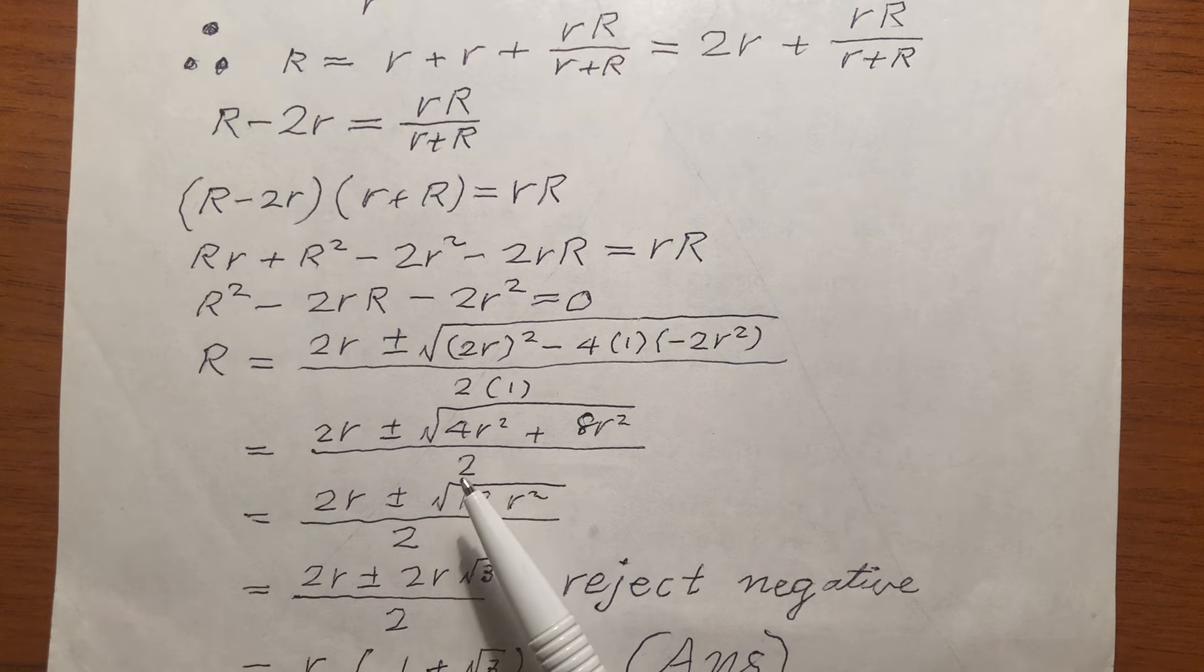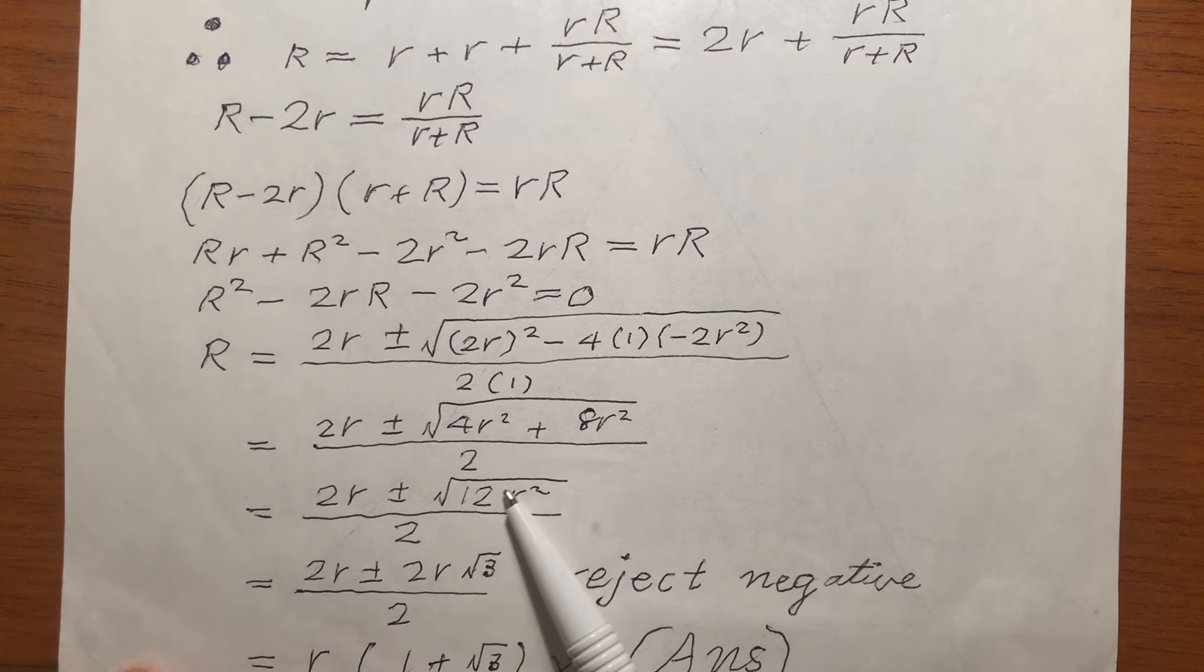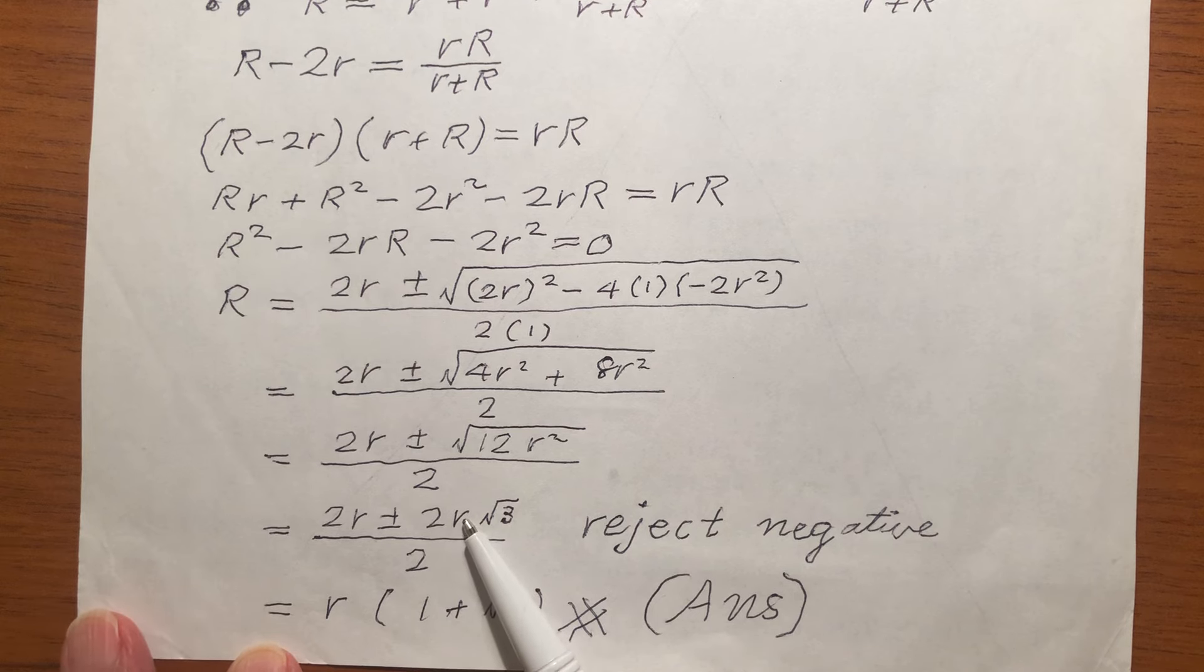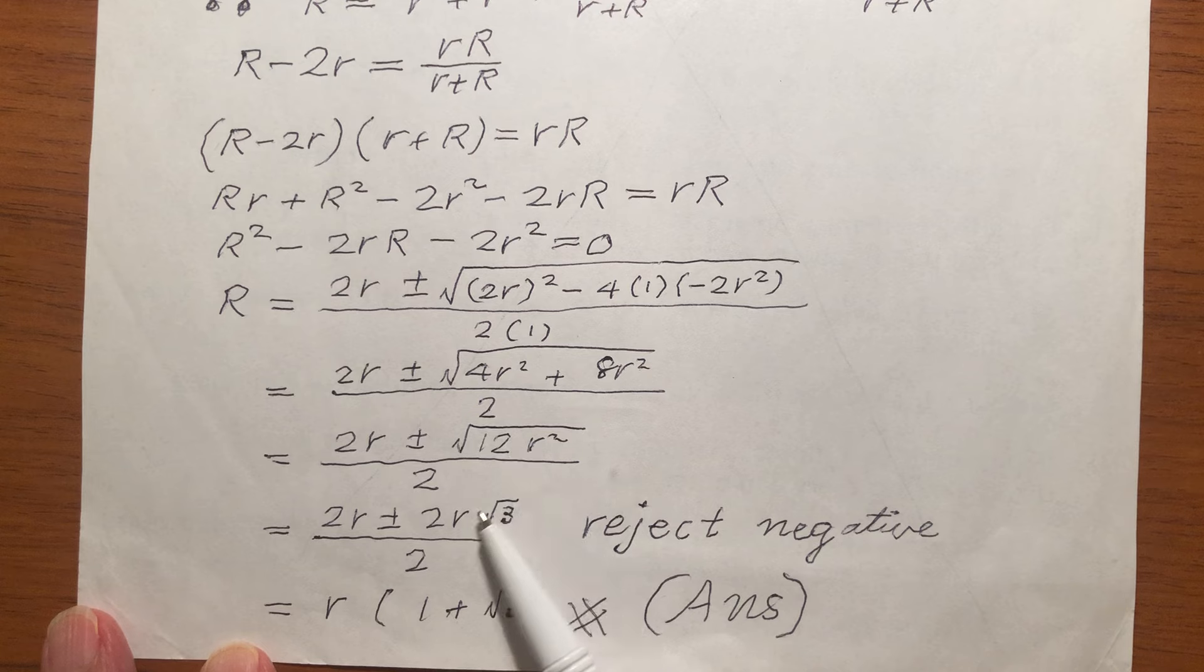I get 2r squared, square root 3. Just simplify this square root part.